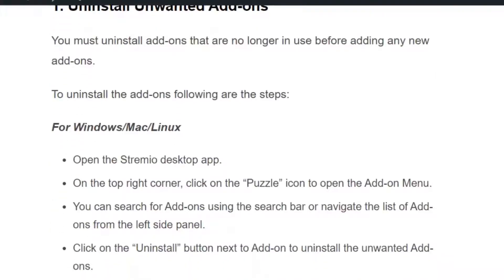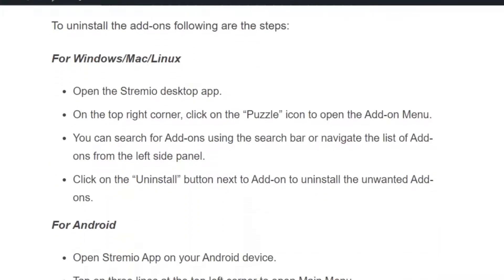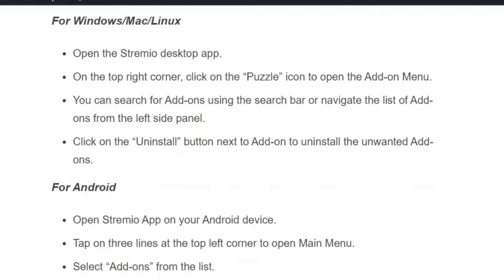If you are on Windows, open the Streamio desktop app and click on the right corner, then click on the puzzle icon to open the addon menu. You can search for addons using the search bar or navigate to the list of addons from the left side panel. Click on the uninstall button next to the addon to uninstall the unwanted addons.